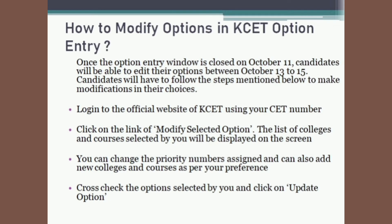Once the option entry window is closed on October 11, candidates will be able to edit their options between October 13 to 15. To make modifications, log in to the official website of KCET using your set number and click on the link of 'modify selected option.' The list of colleges and courses selected by you will be displayed. You can change the priority numbers and also add new colleges and courses as per your preference. Cross-check the options selected and click on 'update option.'